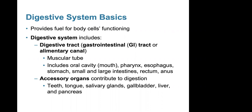There are also various accessory structures that contribute to digestion, which include the teeth, tongue, salivary glands, gallbladder, liver, and pancreas.